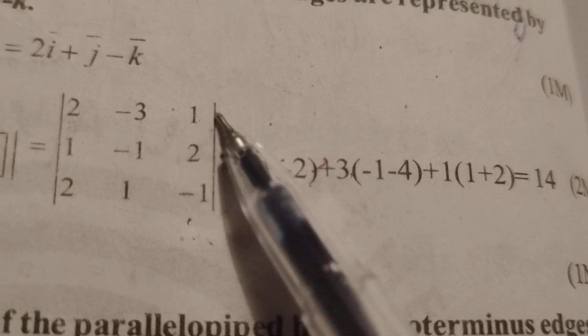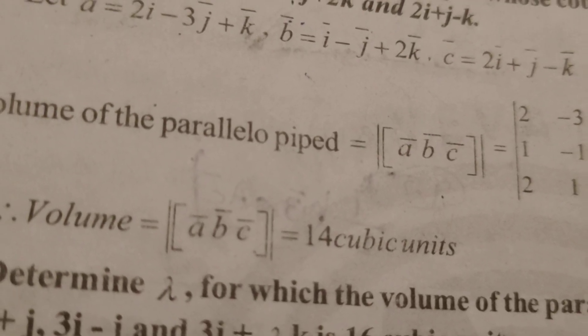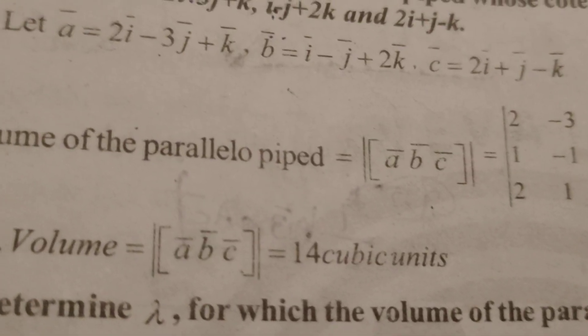Or plus 1 into, accept this row and column using ad minus bc. As per the formula, 1 into 1, 1 minus 1 minus 2, that is plus 2. Simplify this, we will get 14. 14, I mean 14 cubic units.